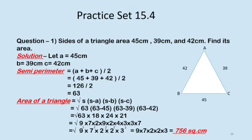Now your semi-perimeter is 63 and you are going to find out the area of the triangle. Area of a triangle is equal to square root of S(S minus A)(S minus B)(S minus C). The next step will be square root of 63, (63 minus 45), (63 minus 39), (63 minus 42), which is equal to square root of 63 into 18 into 24 into 21.